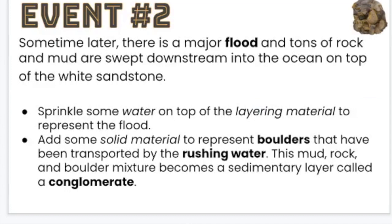Event number two. Sometime later, there is a major flood and tons of rock and mud are swept downstream into the ocean and on top of the sandstone. Sprinkle some water on top of the layering material to represent the flood. Then add some solid material to represent the boulders transplanted by the rushing water. This mud, rock, and boulder mixture becomes a sedimentary rock layer called a conglomerate.